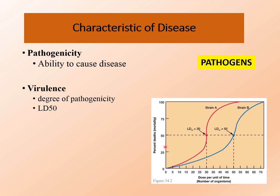As you can see in this diagram, there are two strains: strain A and strain B. 30 organisms are required to kill 50% of the experimental organisms by strain A. However, 50 organisms of strain B are required to kill 50% of the experimental population. That means strain A is more virulent, because only 30 organisms can cause the death of 50% of the experimental organisms compared to strain B. There are many different determinants of virulence that can be genetic, biochemical, or structural features that enable a pathogen to produce disease in a host.